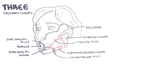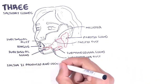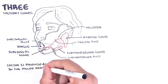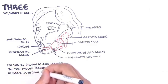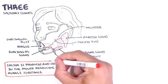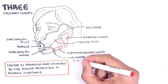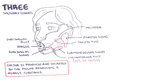Saliva is produced and secreted into the mouth, producing an alkaline substance. Interestingly, the submandibular gland produces the majority of the saliva, roughly 70%. Second is the parotid gland, which is about 25% of saliva production.